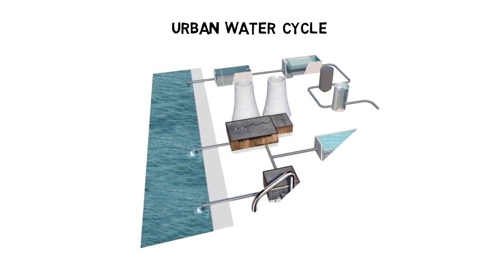There are two different cycles water can pass through before it reaches our taps: the urban water cycle and the natural water cycle.